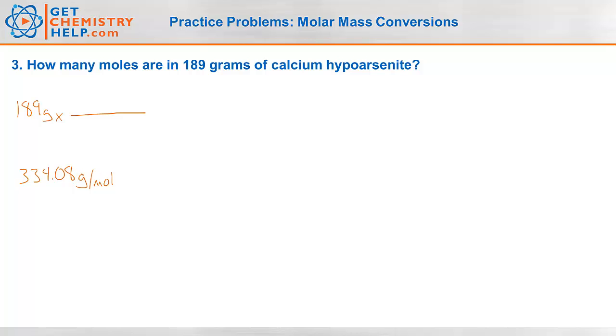So remember, any conversion factor can always be flipped. We can write this as 334.08 grams per mole, but I could also write it as one mole over 334.08 grams. And that's the way that I need to write it because I need grams to cancel. So this grams has to go in the bottom. So 334.08 grams is a mole of calcium hypoarsenite. So grams cancels. Three sig figs divided by five sig figs. My answer should have three sig figs, and I got 0.566 moles of calcium hypoarsenite.